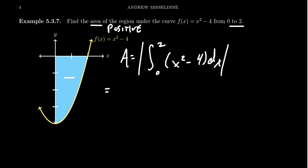So using the Fundamental Theorem of Calculus, we can calculate this area by finding an antiderivative of x² - 4, which would look like x³/3 - 4x, as we range from 0 to 2.